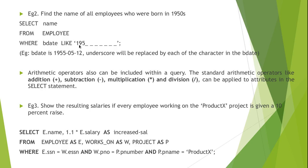Since 1950 is the given decade, '195' will be constant, and the next digit can be from 0 to 9. The next underscore will be replaced by either a space or a hyphen, then two underscores for the month, again a space or hyphen, and two more underscores for the day. For example, if the birth date is 1955-05-12, each underscore is replaced by the corresponding character. This is how pattern matching is implemented: use underscore to compare character by character, or percentage to check whether a pattern exists.